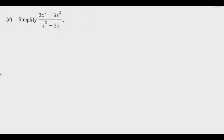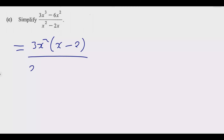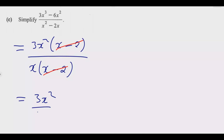For part (c), simplify (3x³ minus 6x²) divided by (x² minus 2x). Factor the numerator: 3x squared times (x minus 2). Factor the denominator: x times (x minus 2). The common factor (x minus 2) cancels, leaving 3x squared divided by x, which equals 3x. So the answer is 3x, and you get the 12 marks for this section.